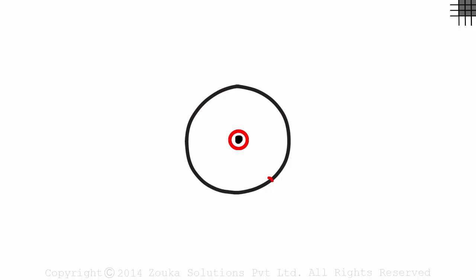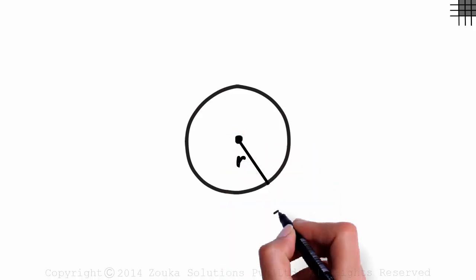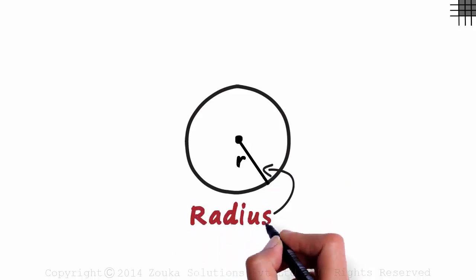The distance from the center to any point in the circle is always constant and is called the radius of the circle. No matter where you draw the line from the center to the boundary, the distance will always be the same.